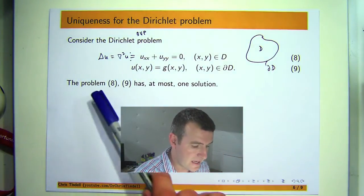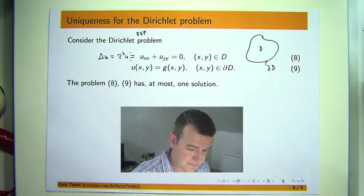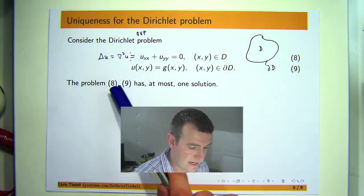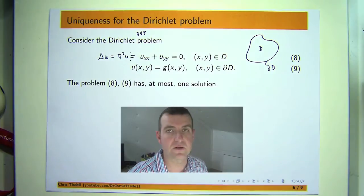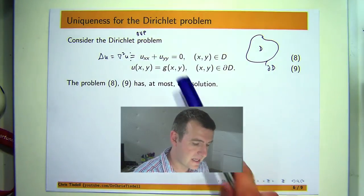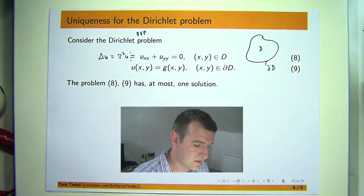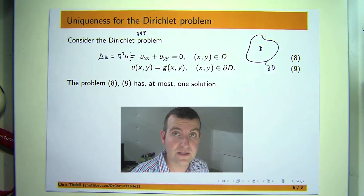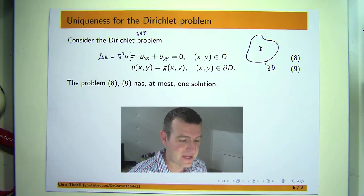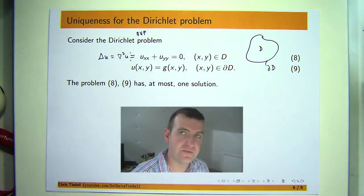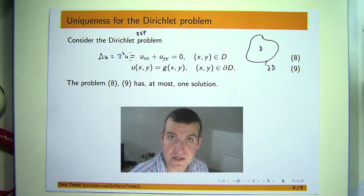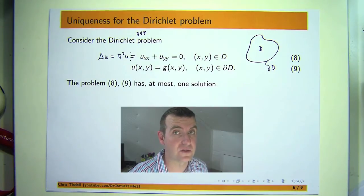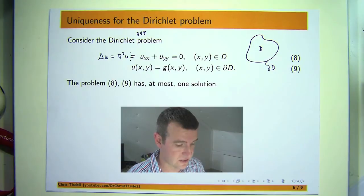So the claim is that the problem (8), (9) has at most one solution. So first of all what does this mean? Well it means that this Dirichlet BVP has either one solution or no solution. Now what is the significance of that? Well it means that if you're solving this problem and you manage to construct a solution then you know it's the only solution to the problem so you can stop looking for solutions.